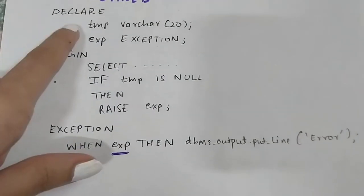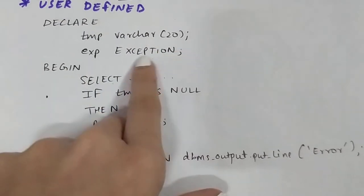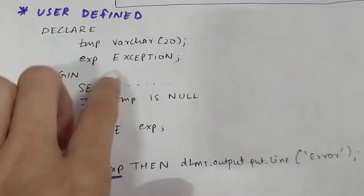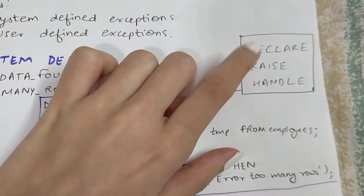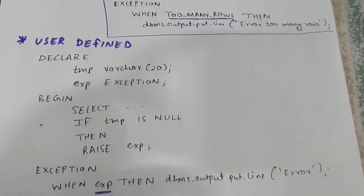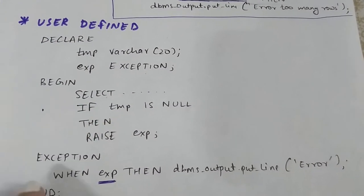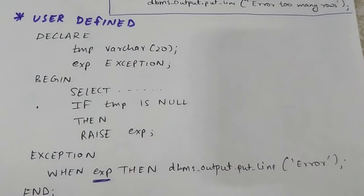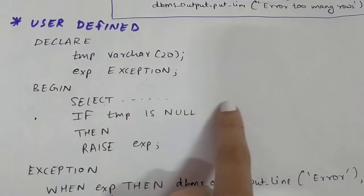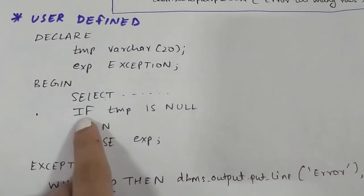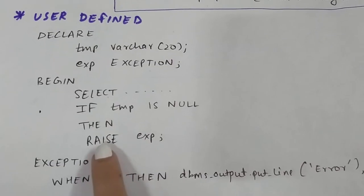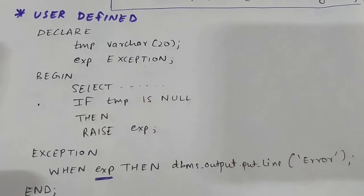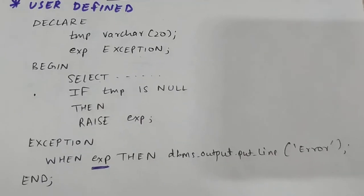Let's see an example. In the DECLARE block we declare a variable and also declare an exception — for example: exp EXCEPTION. That is how you declare an exception. The second step is to raise it. In the BEGIN block, after your SQL query and logic, you write a condition — for example, IF tmp IS NULL THEN RAISE exp. So RAISE is used to raise a declared exception when a condition is met.